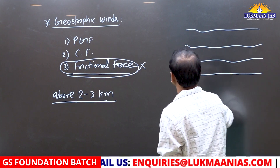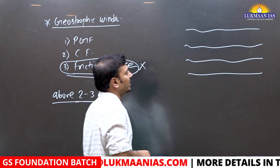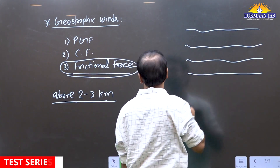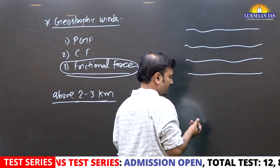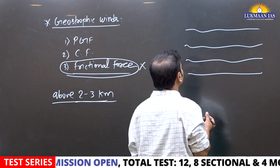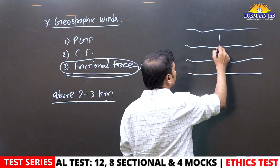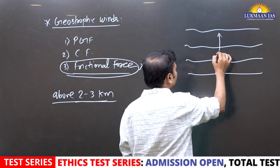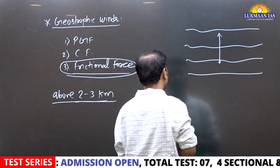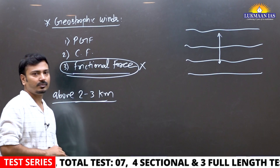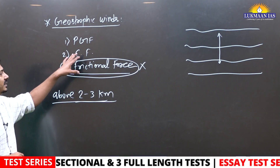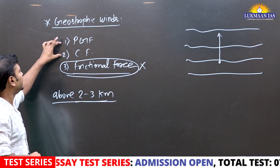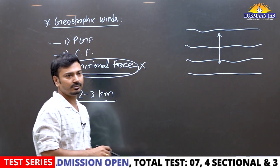If we draw the isobars like this, and these are the high pressure areas and these are the low pressure areas, the wind is trying to move in this direction. But the pressure gradient force is exactly countered in the opposite direction by the Coriolis force. Since there is no frictional force, these two forces will try to balance.